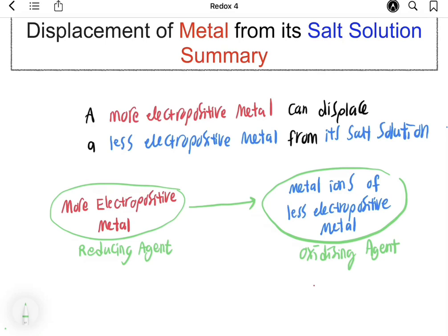To summarize what we learned about displacement of metal from its salt solution: a more electropositive metal can displace a less electropositive metal from its salt solution. The more electropositive metal undergoes oxidation by losing electrons, and the electrons are received by the metal ion which undergoes reduction. The more electropositive metal acts as the reducing agent and the metal ion of the less electropositive metal acts as the oxidizing agent. Essentially, there is a transfer of electrons from the more electropositive metal to the metal ion of the less electropositive metal. That's all for today — stay home.